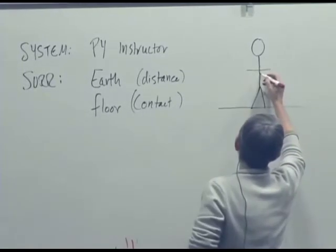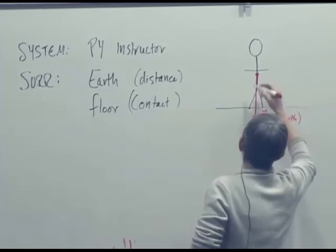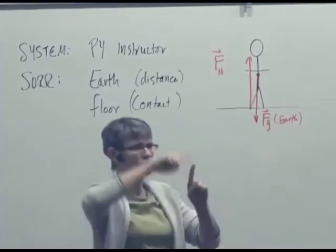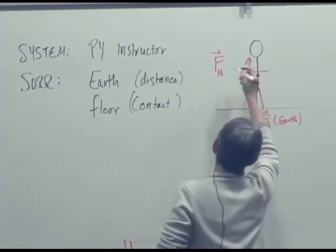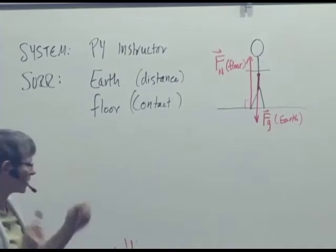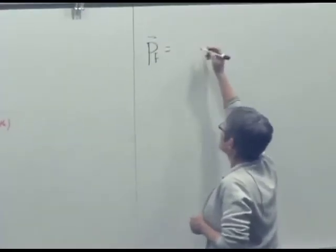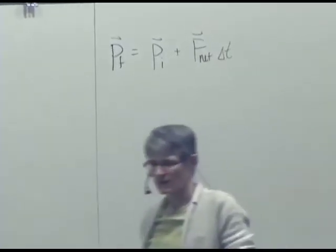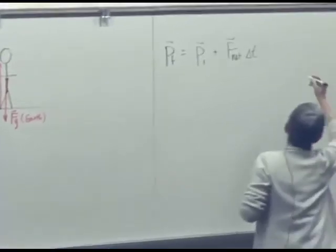We can draw a diagram and we can write down the momentum principle and solve for the force the floor is exerting on me. So we should draw the forces on the system. So here's the gravitational force due to the earth, and there's some force upward due to the floor. These forces are often called normal forces, and that doesn't mean ordinary. It's normal in the mathematical sense of being perpendicular to something. So the floor force is perpendicular to the floor, so it's called a normal force.